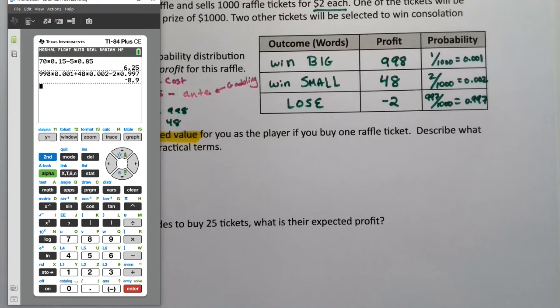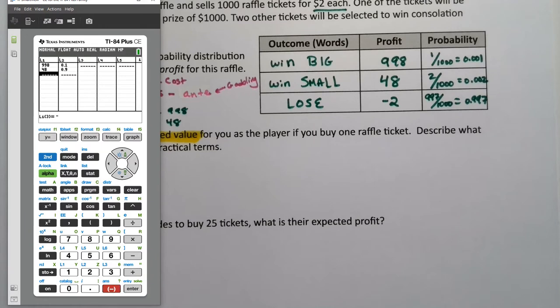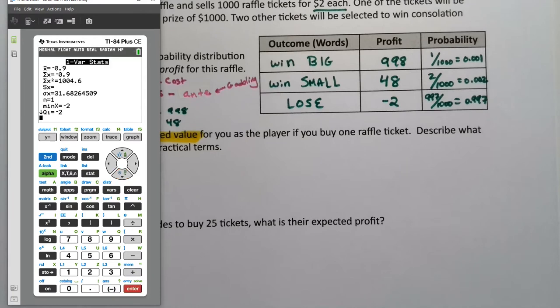And then I'm going to show StatCrunch. If we did stat edit, I'll just clear these out. So 998, 48. Remember on the calculator, you have to use a little negative button down here at the bottom. So negative two, enter. And then we can make this 0.001, 0.002, 0.997. Stat, calculate one variable. Make sure your frequency list is L2. And there you have it, negative 0.9, which was the same thing we did when we had it by hand. Negative 0.9.